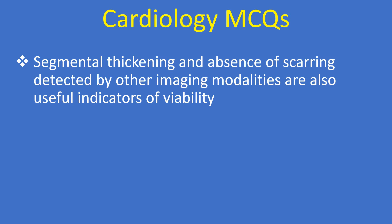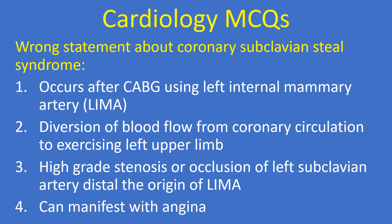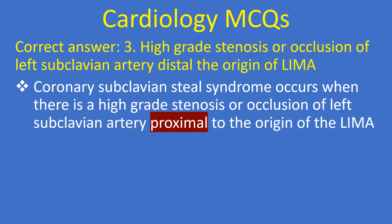Segmental thickening and absence of scarring detected by other imaging modalities are also useful indicators of viability. Question: Wrong statement about coronary subclavian steal syndrome. Option 1: occurs after CABG using left internal mammary artery. Option 2: diversion of blood flow from coronary circulation to exercising left upper limb. Option 3: high-grade stenosis or occlusion of left subclavian artery distal to the origin of LIMA. Option 4: can manifest with angina. Correct answer: 3.